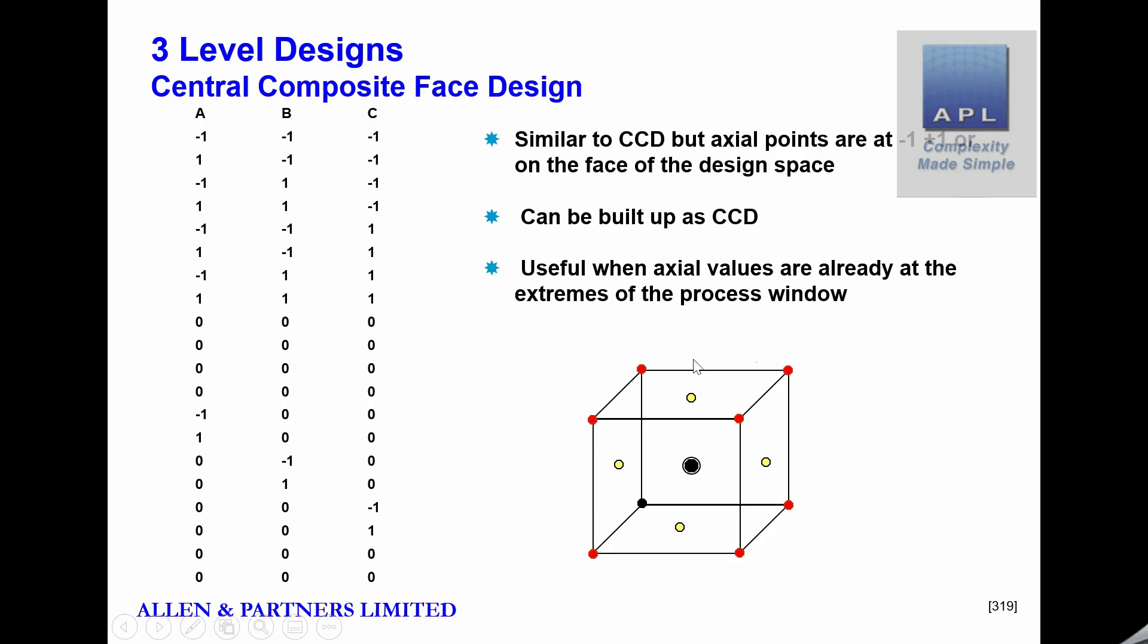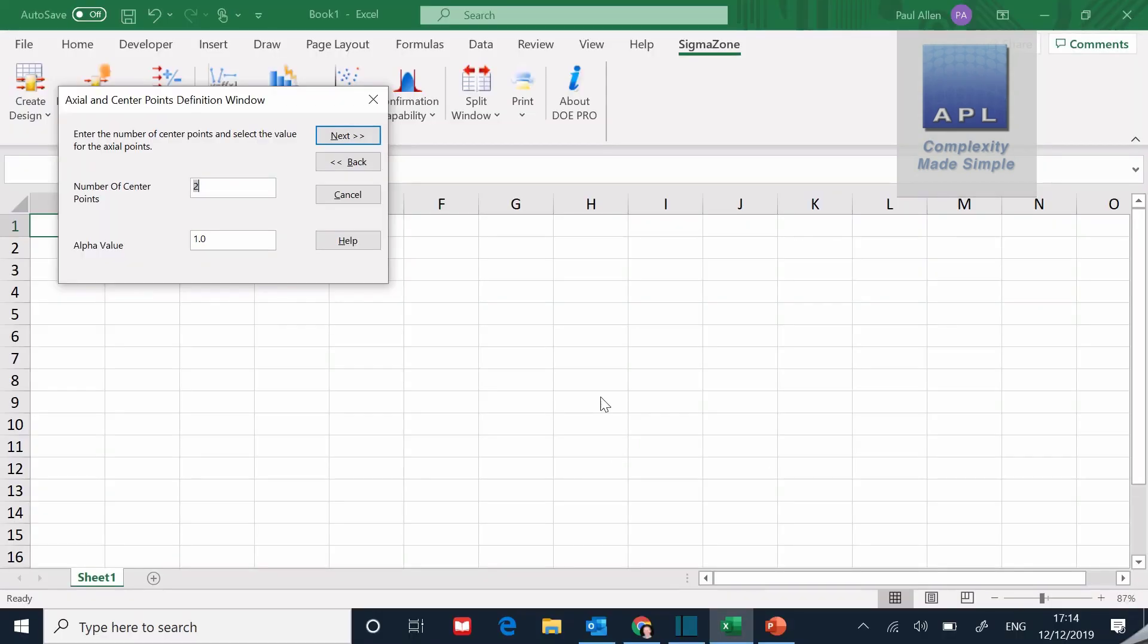So what we actually do is the central composite face design, which you can see here look in this diagram. And what we've now done, we've pulled those yellow points back from 1.63 and they are now sitting on the face of the design space like a number five. Now that would be - so if you put an alpha value of 1.63 you do the proper central composite. If you do an alpha value of one in the software here, what you are creating is the central composite face design. And now of course what you're doing is you're testing here on the faces.